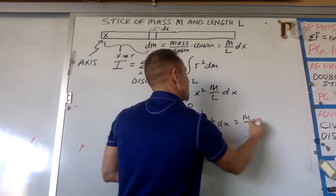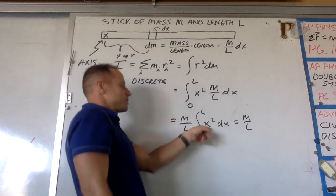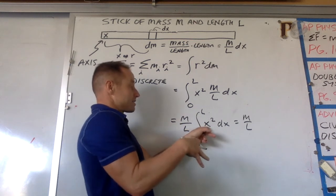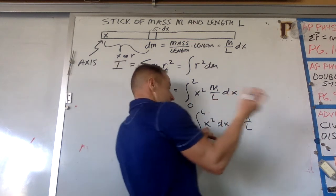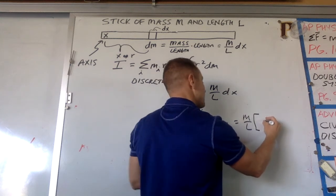So that's going to be M over L. We need the function for which if you take its derivative, you get x squared. So that will be like x cubed over three would be the antiderivative of that thing.